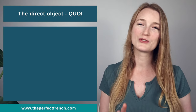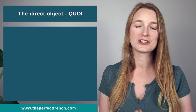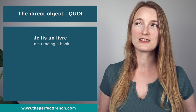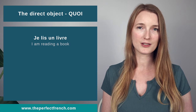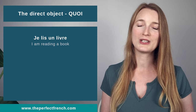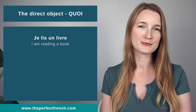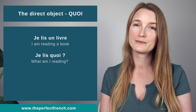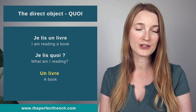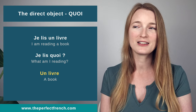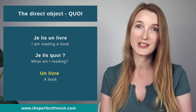We are going to start with two sentences using the question quoi. Je lis un livre — I am reading a book. Je lis quoi? A book. Un livre is the direct object, as simple as that. Elle écrit une lettre. What is she writing? A letter. Une lettre is the direct object.